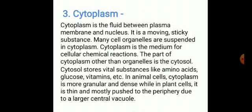The important points regarding cytoplasm: Cytoplasm is the jelly-like substance present between plasma membrane and nucleus. Many cell organelles and nucleus are present in cytoplasm. Cellular chemical reactions take place in cytoplasm. Cytosol is the part of cytoplasm other than cell organelles, and it stores vital substances like amino acids, glucose, and vitamins.